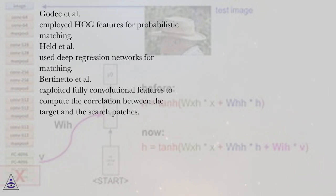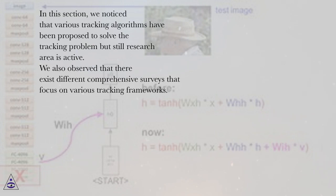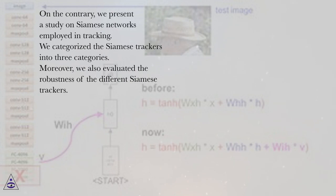In this section, we noticed that various tracking algorithms have been proposed to solve the tracking problem but still research area is active. We also observed that there exist different comprehensive surveys that focus on various tracking frameworks. On the contrary, we present a study on Siamese networks employed in tracking. We categorized the Siamese trackers into three categories. Moreover, we also evaluated the robustness of the different Siamese trackers.